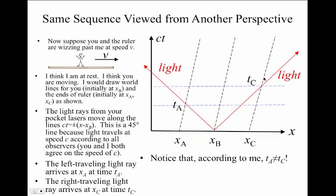But now, notice that T A and T C are not equal. At least, according to me, I think that those two times are different. In other words, I do not judge these two events, the arrival of the light pulse at A and the arrival of the light pulse at C, to be simultaneous. Isn't that amazing? Because you thought that they arrived at the same time.